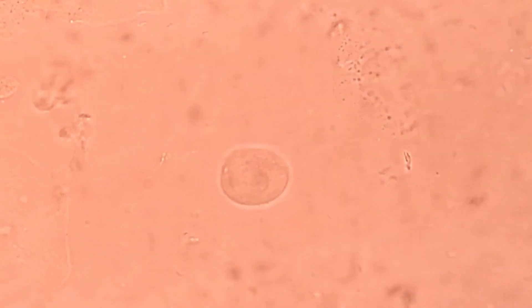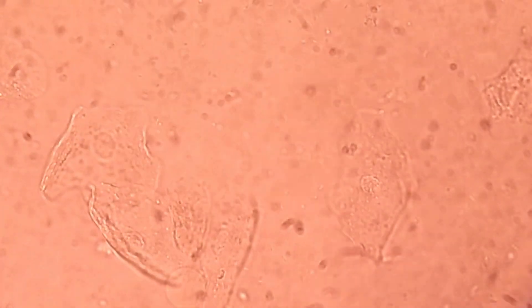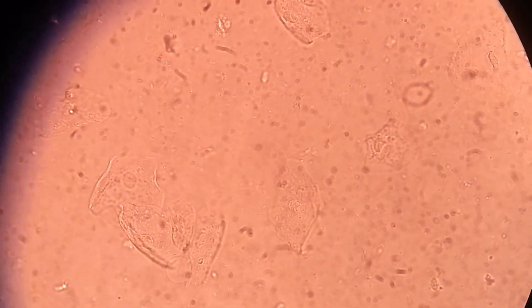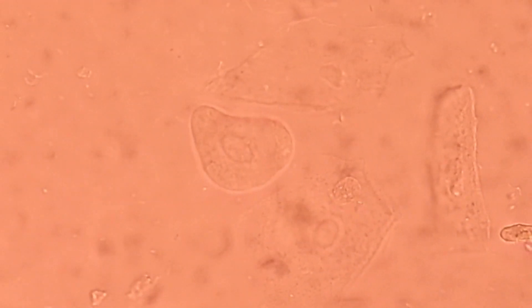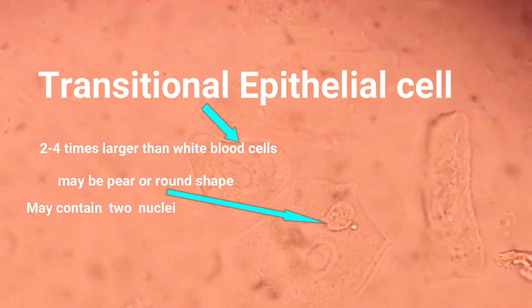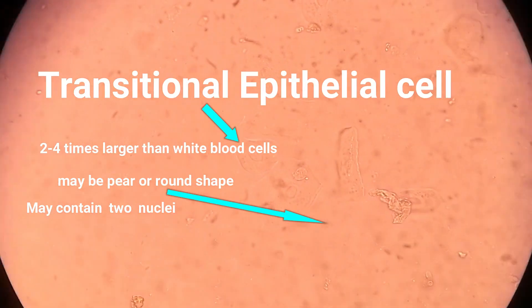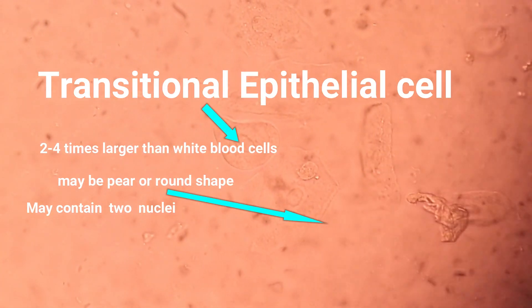Transitional epithelial cells are two to four times larger than white blood cells. They may be pear-shaped or round, and occasionally these cells may contain two nuclei.